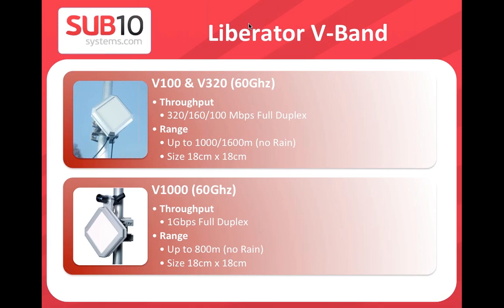For higher throughput, the link is shorter because you use higher modulation and a bigger channel, making transmission more sensitive to attenuation. The V1000 works up to 800 meters in no-rain conditions. The unit size is the same across all models — you cannot tell from the outside whether it's a V100, V320, or V1000. The only difference is the internal radio card.